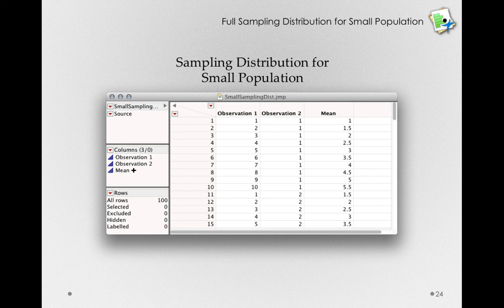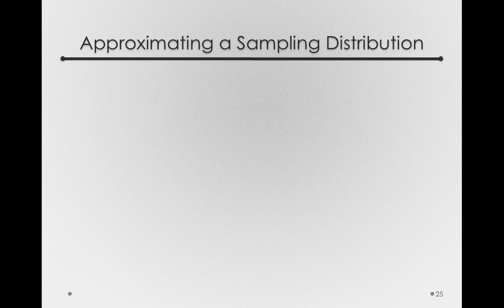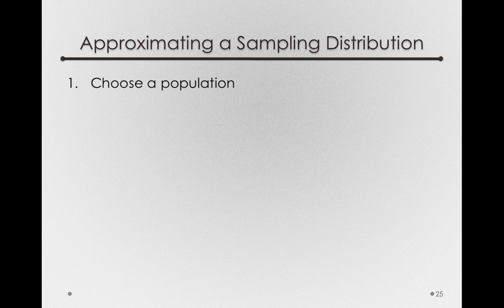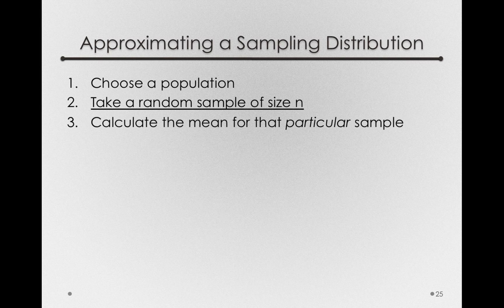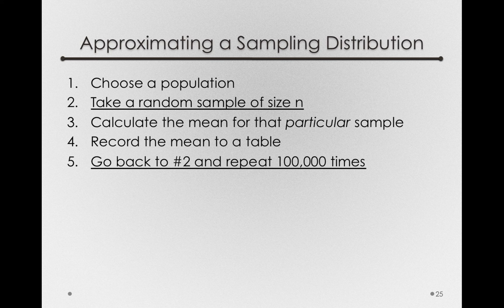In practice, we'll never have populations small enough where we'll ever be able to form a real sampling distribution. So instead, to learn about how we'll make inferences from sampling distributions, let's approximate a sampling distribution — something we've already been doing. Let's review the steps: first, choose a population; next, take a random sample of size n; calculate and record the sample mean; then go back and repeat this 100,000 times to get a reasonable approximation of what the real sampling distribution looks like.